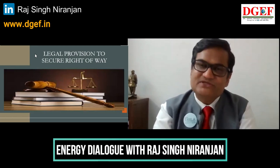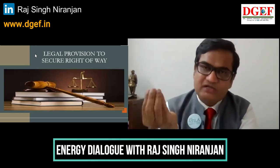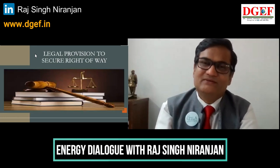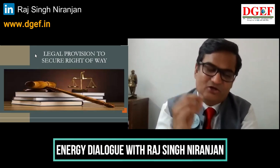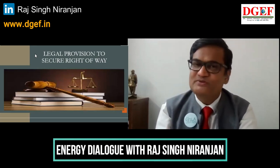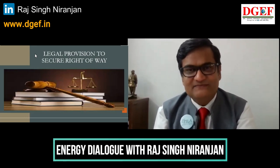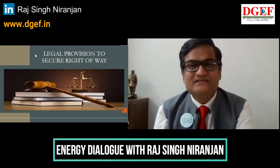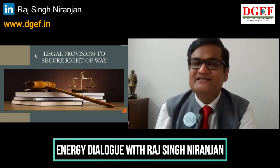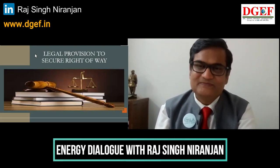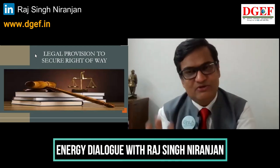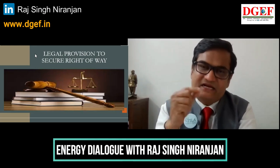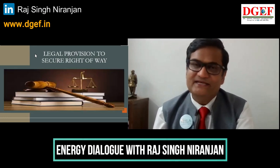There are four ways in which a transmission line can be laid. One is on-ground line. Second is under-sea line — below the ocean or other water bodies. Third is underground line. Fourth is overhead line. On-ground lines are very dangerous — chances of theft, electrocution and other issues are more, so we generally don't see them. Under-sea line is used when no other option is available and is a matter of international affairs handled by the Ministry of External Affairs — the Electricity Act does not cover it. Underground lines and overhead lines are clearly provided for in the Electricity Act.